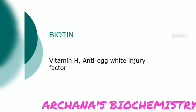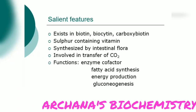Good morning everybody. Today let's discuss about the important vitamin which is biotin. Vitamin H is also known as anti-egg white injury factor. The salient features of biotin: it exists in biotin form, biocytin form, and carboxybiotin form. It is a sulfur-containing vitamin — not a sulfur-containing amino acid. Sulfur-containing amino acids are cysteine and methionine. Biotin is synthesized by the intestinal flora and is involved in the transfer of carbon dioxide.